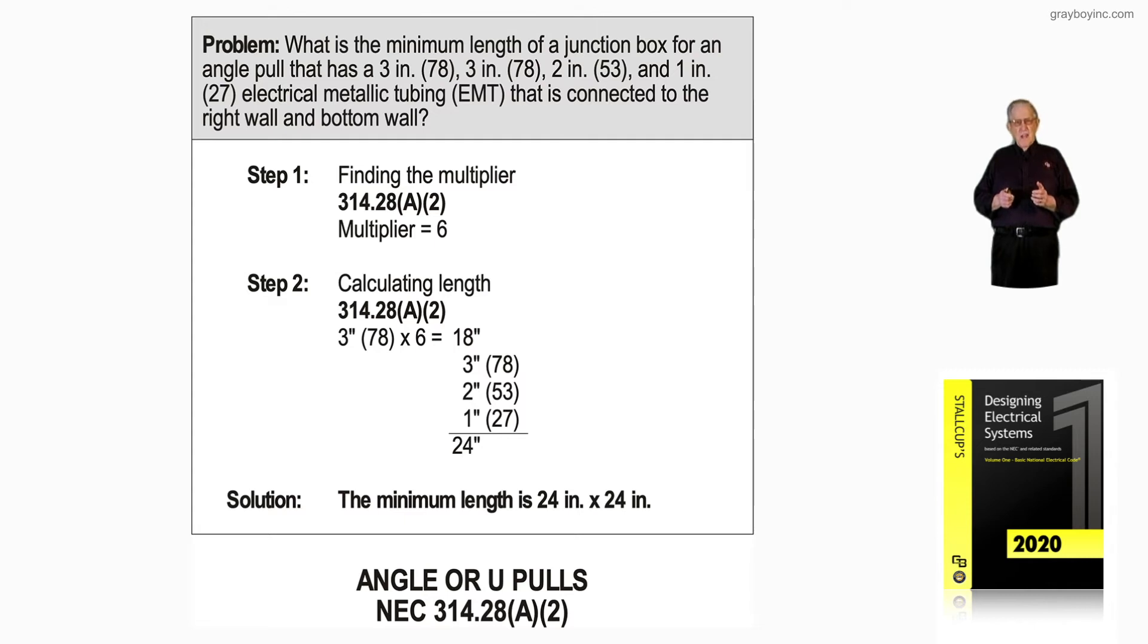And again, the size of the conductors that you pull in make a big difference. And I would like to point out, in closing out this illustration, we're dealing with number 4 conductors or larger. And that's why we use the conduit size for a straight angle or U-pull to size the box.